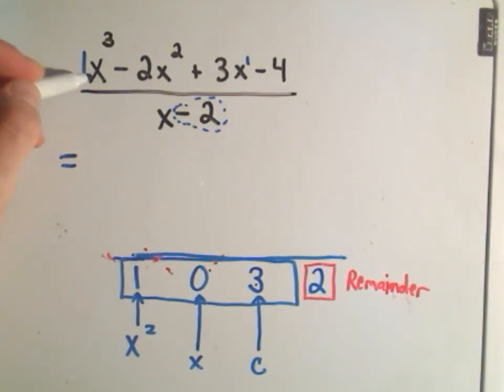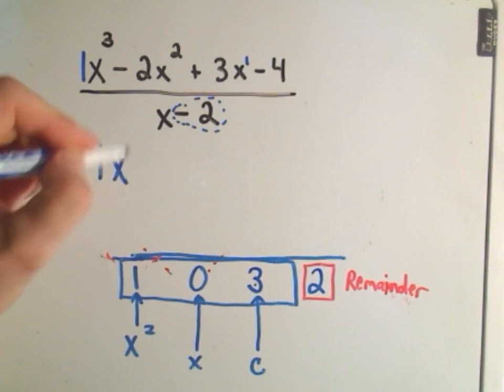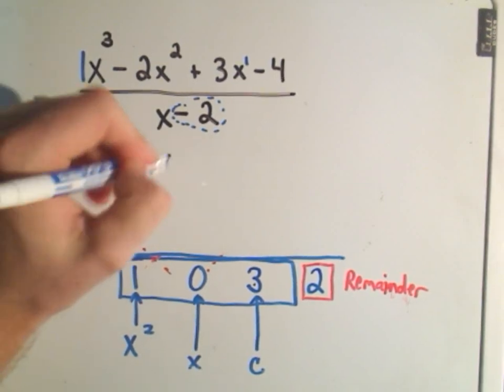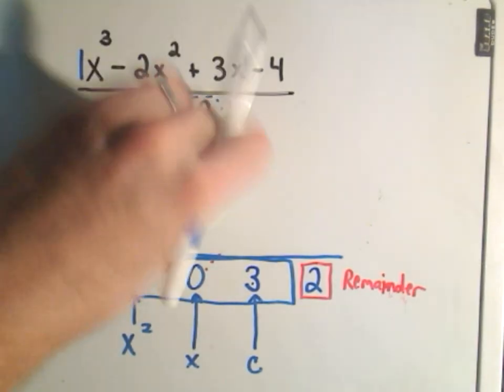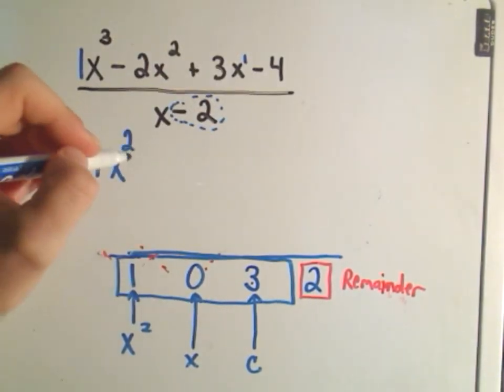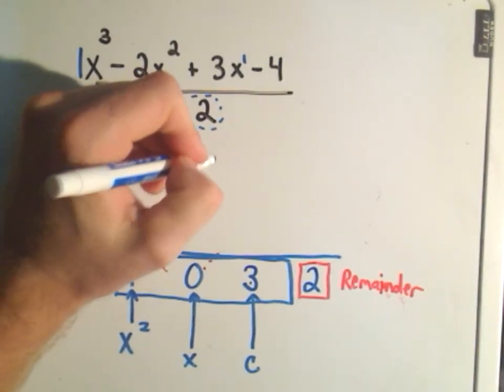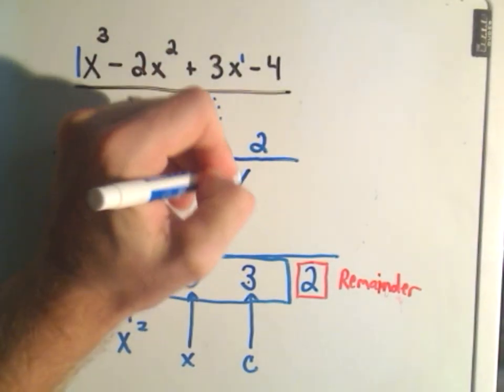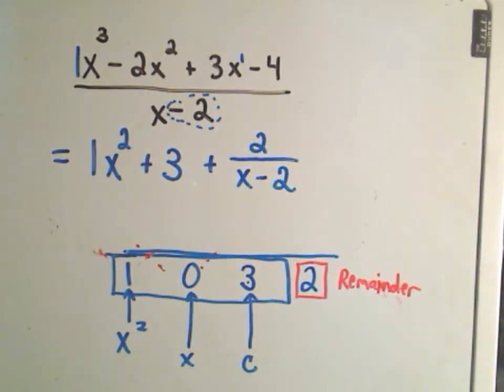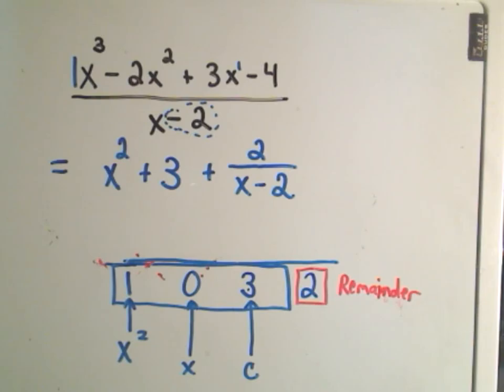It says we can actually write x cubed minus 2x squared plus 3x minus 4 divided by x minus 2 as 1x squared plus 0x. So usually 0x we'll just leave that out. So 1x squared plus 3. And then my remainder is 2. And we put that over whatever we were originally dividing by, which is x minus 2.